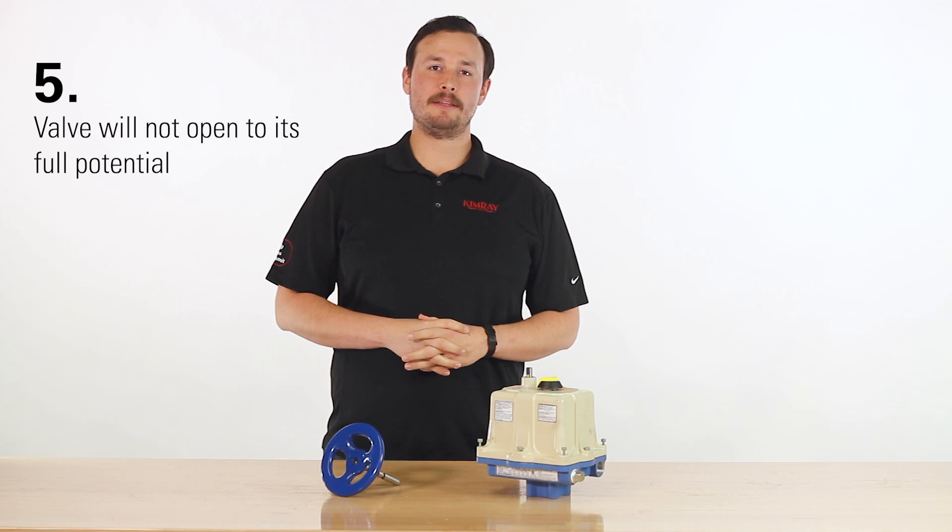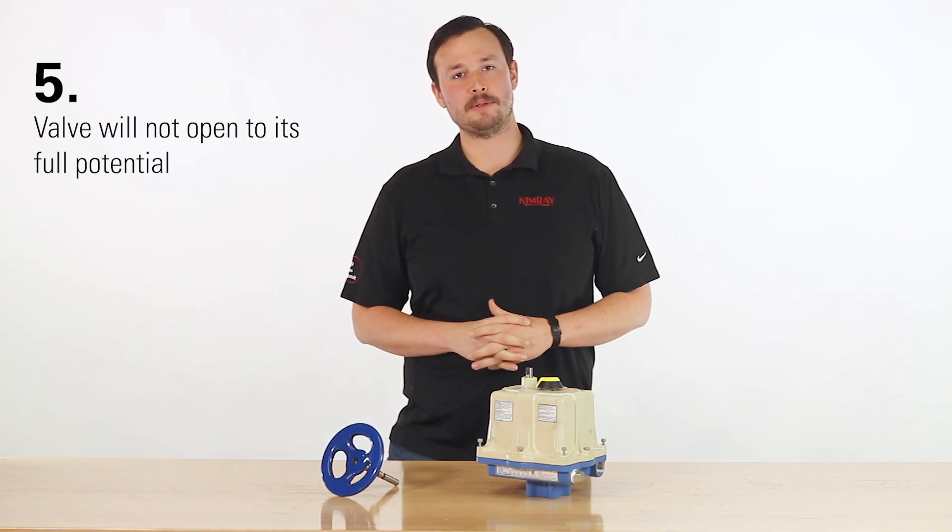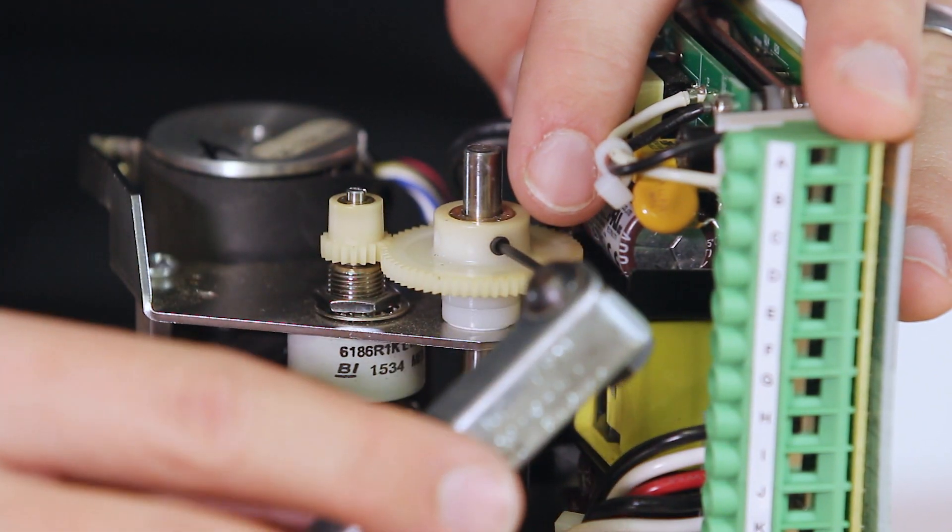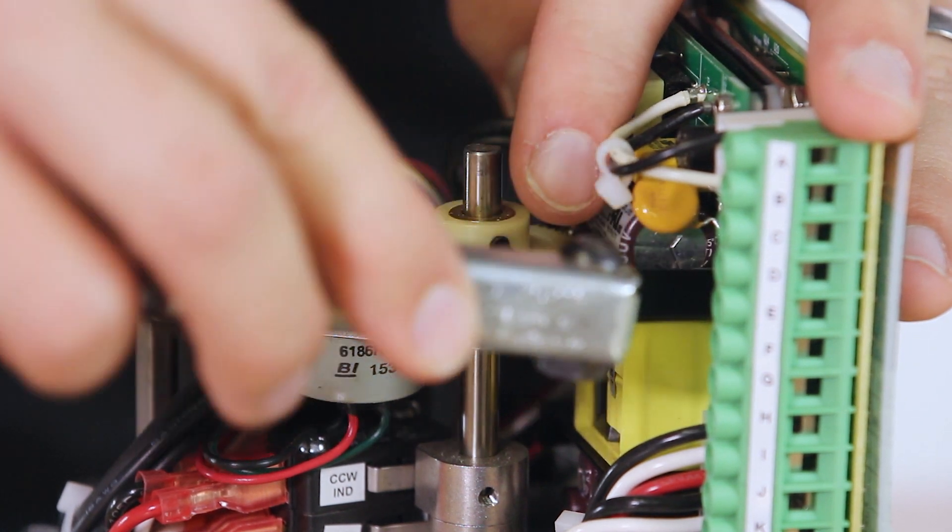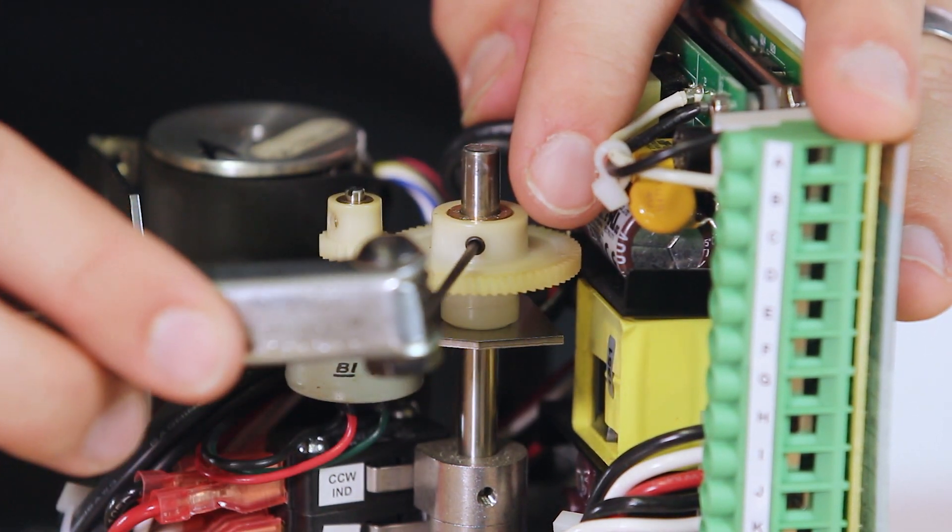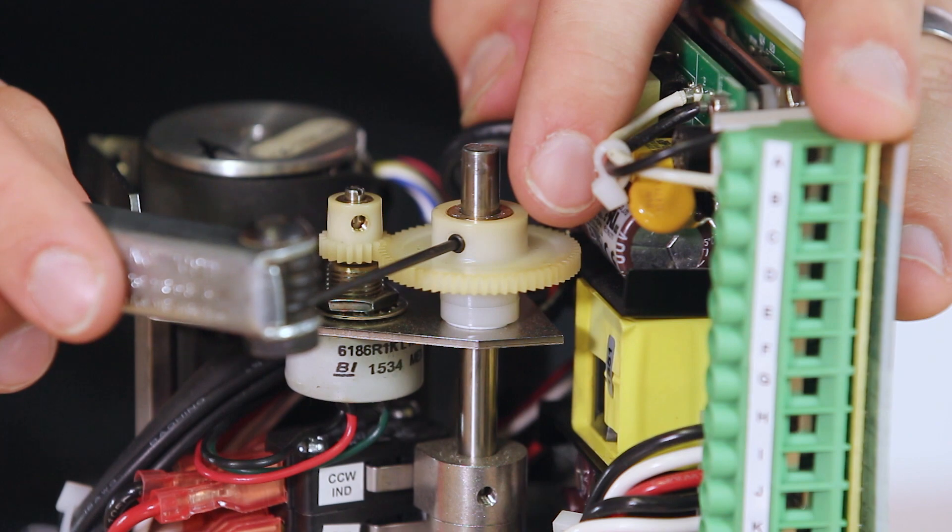If after calibrating the valve went open to its full potential, the potentiometer may need to be adjusted to achieve its full rotational capacity. Rotate it a quarter turn clockwise until the LED is solid again.